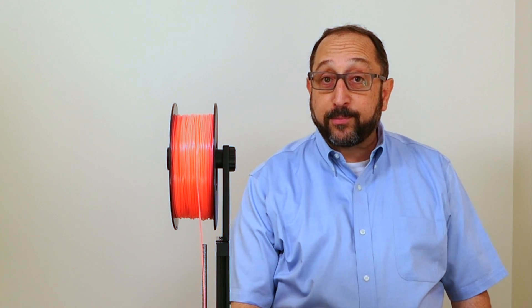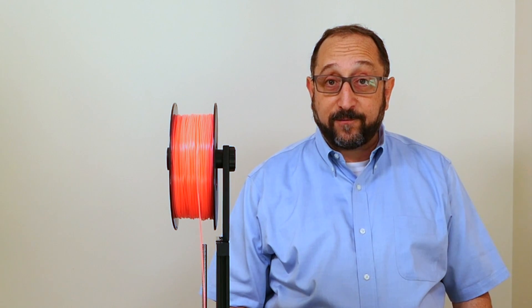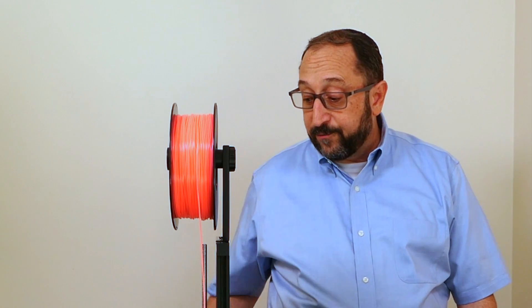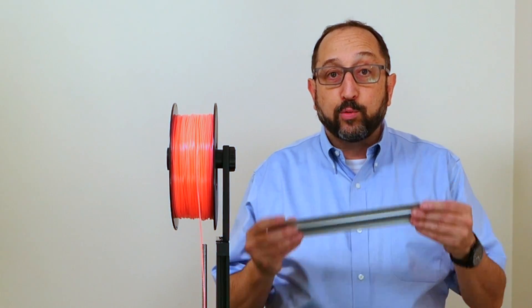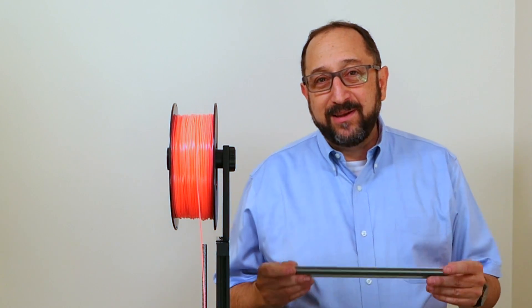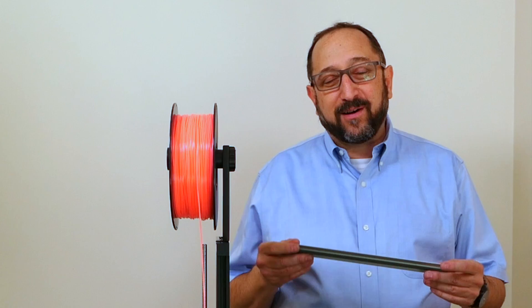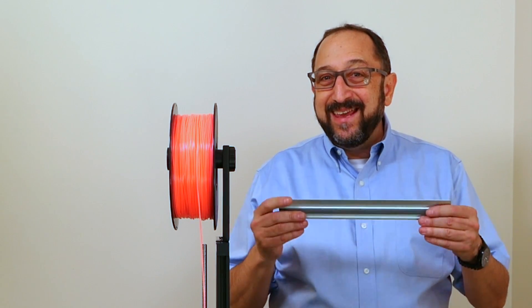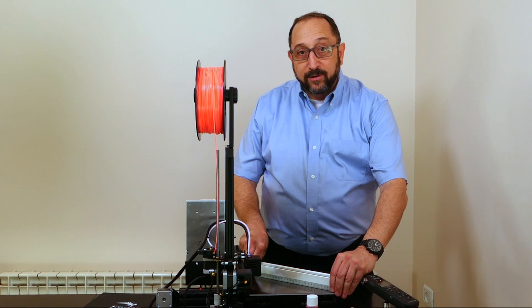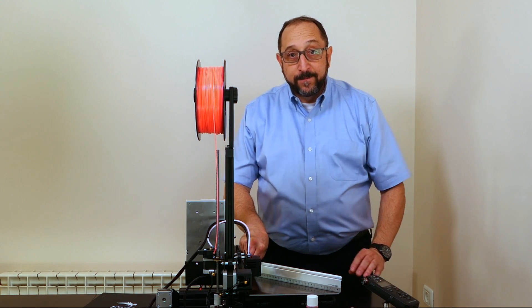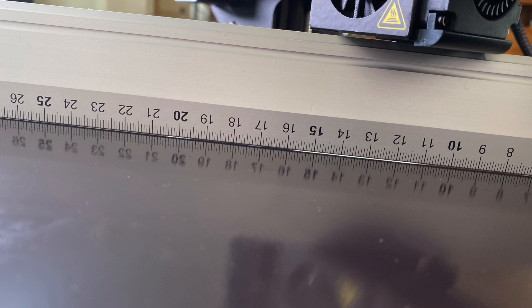One of the problems that people with Ender printers are facing is that the print surfaces are not always perfectly flat. In order to determine if your print surface is flat, I recommend taking off your magnetic print bed and getting a metal ruler. You can probably use a plastic or wooden ruler, but I think you need a metal ruler. They're not very expensive. You put the metal ruler diagonally across the print surface, and then you look underneath and see if you see light at any point.